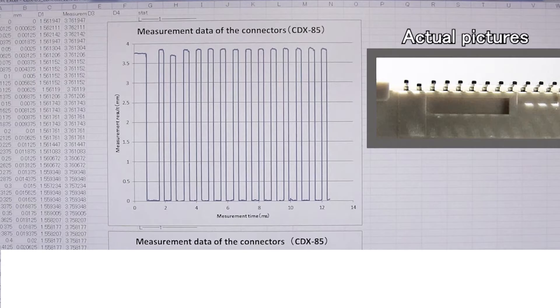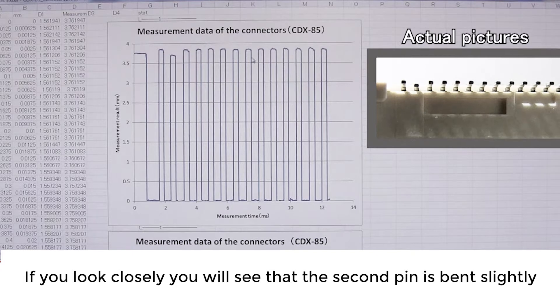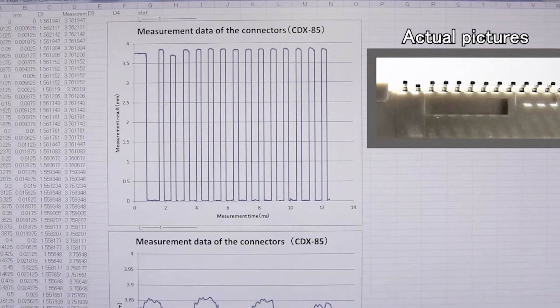After taking the data from the sensor into Excel, I set up a graph that shows the profile of the connector pins. If you look closely you'll see that the second pin is bent slightly and that the sensor was easily able to detect it.